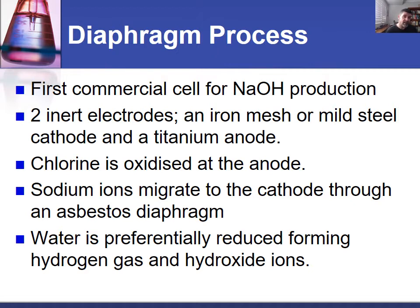Last time we looked at the mercury cell, which was great for high purity and good quality of product, but expensive, and also had problems with mercury as a waste product being released into the environment. An alternative to that is the diaphragm process. We'll look at it in detail, make comparisons with the mercury cell, and then see how it was further refined into the membrane process in a future video.